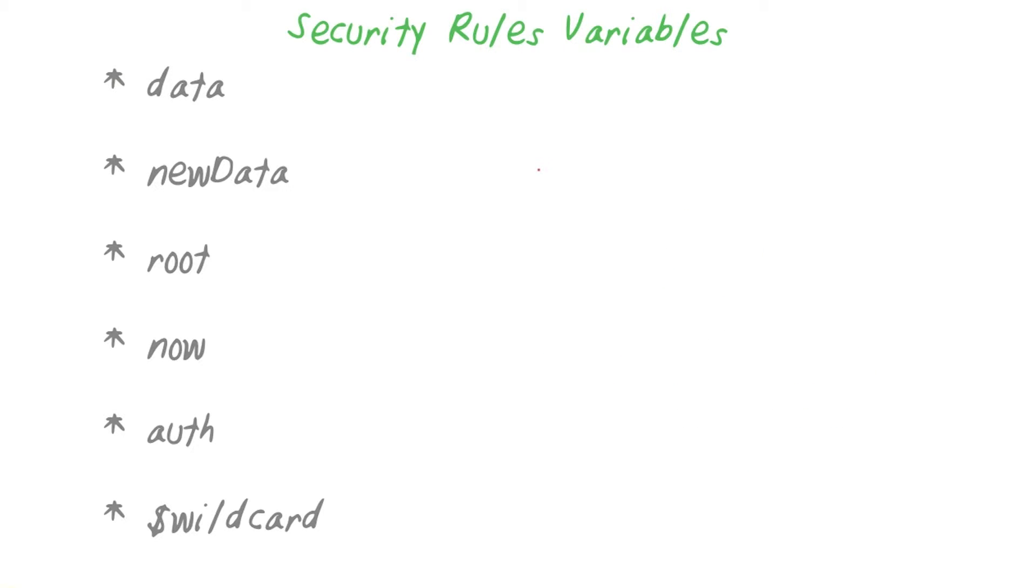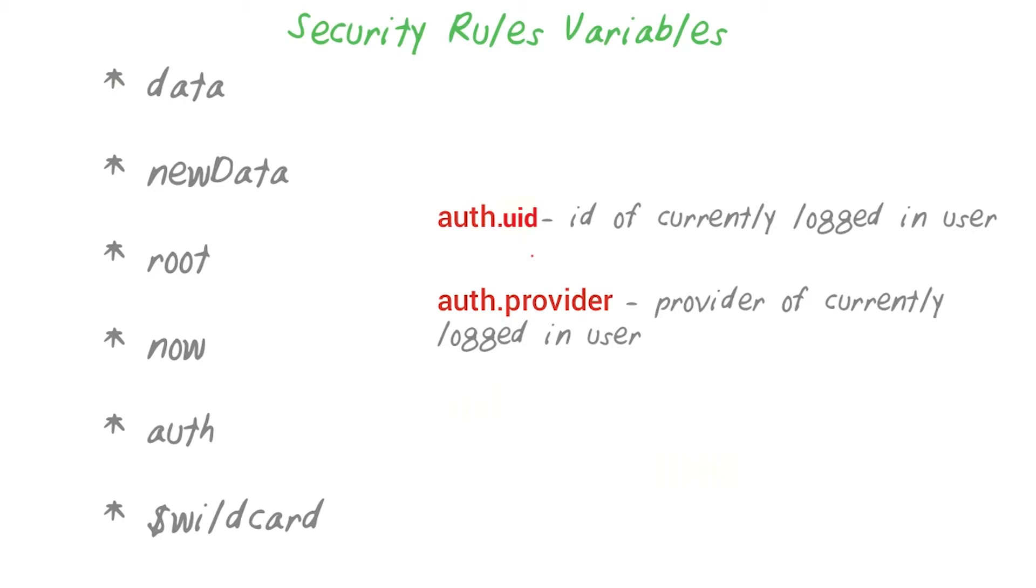But one of the most important variables is the auth variable. This variable has two pieces of information: the provider and the UID of the user, if they're logged in.